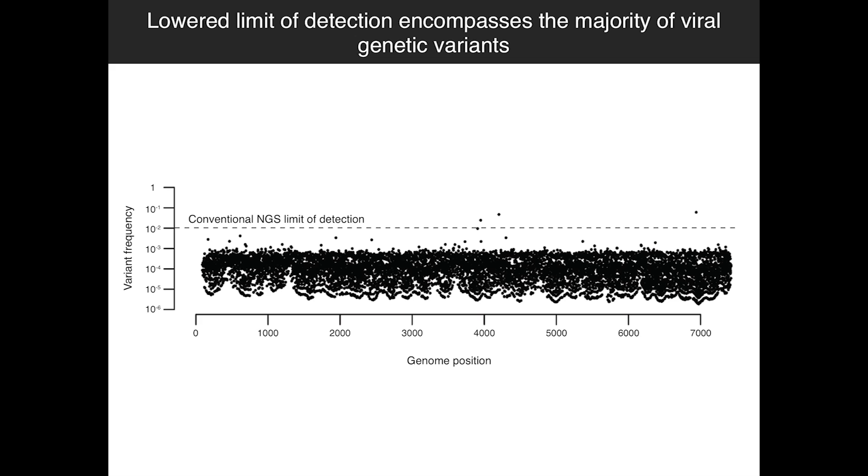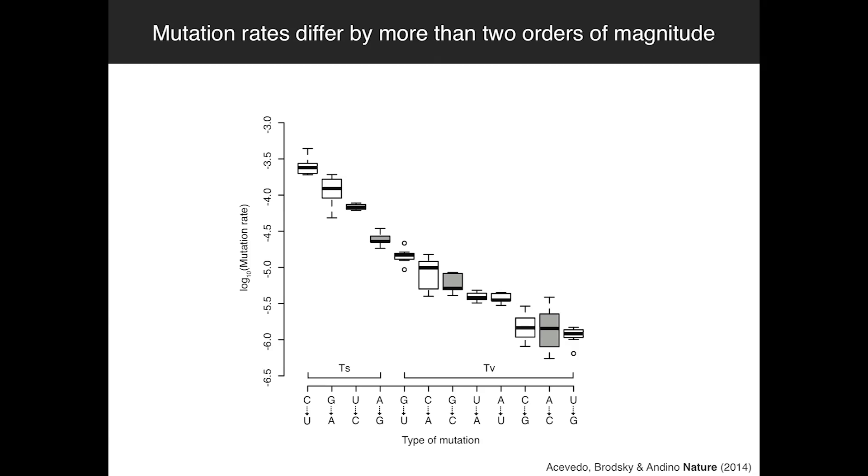Some of you might be thinking this just looks like a mess — a cloud of variants. In our paper we discuss the math in more detail. One of the things we can look at are mutation rates, which is the most fundamental aspect of virus genetics. The way we're able to do this is by looking at the frequency of lethal mutations. Lethal mutations can't contribute to the next generation, so every generation they have to be reintroduced, and the rate at which they're reintroduced is the mutation rate. For every type of mutation, we've looked at the frequencies of lethal mutations and estimated the rates based on those.